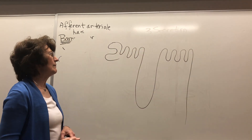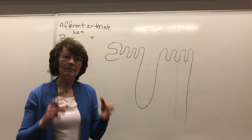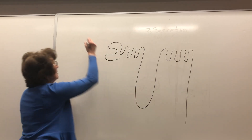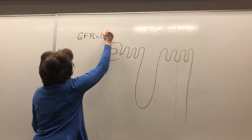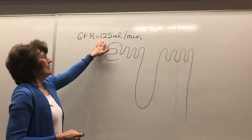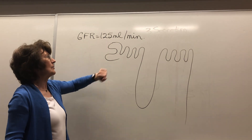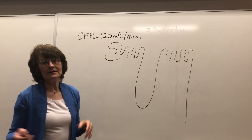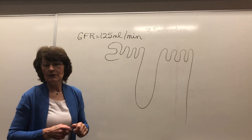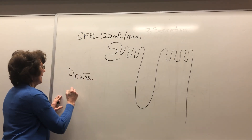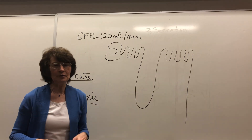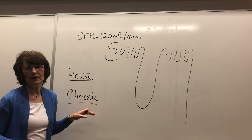Let's look at acute renal failure. First, what's the normal glomerular filtration rate? The normal is 125 milliliters per minute — which works out to 180 liters per day. Now this is important as we look at renal failure. We've got acute and chronic — we know what acute is: it came on pretty much overnight. Chronic means they've had this for 20 or 30 years.